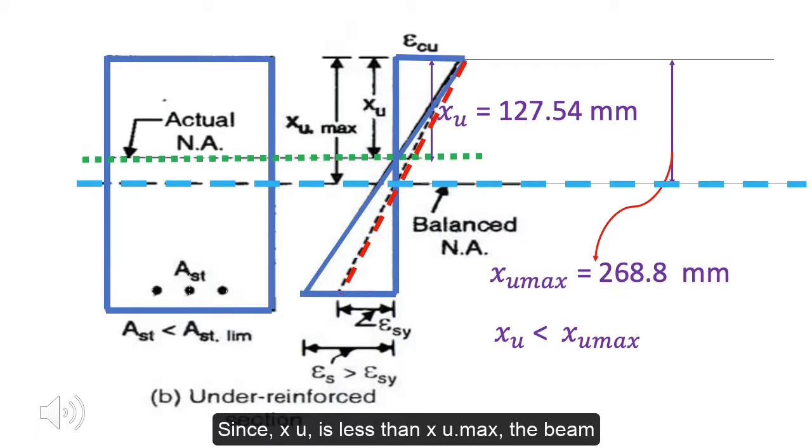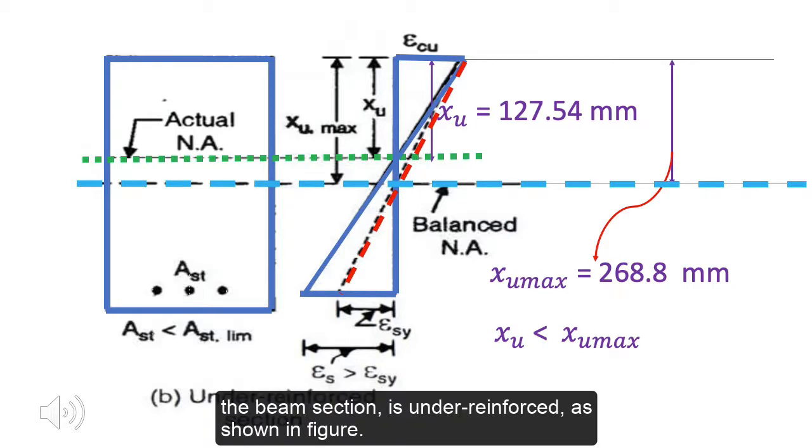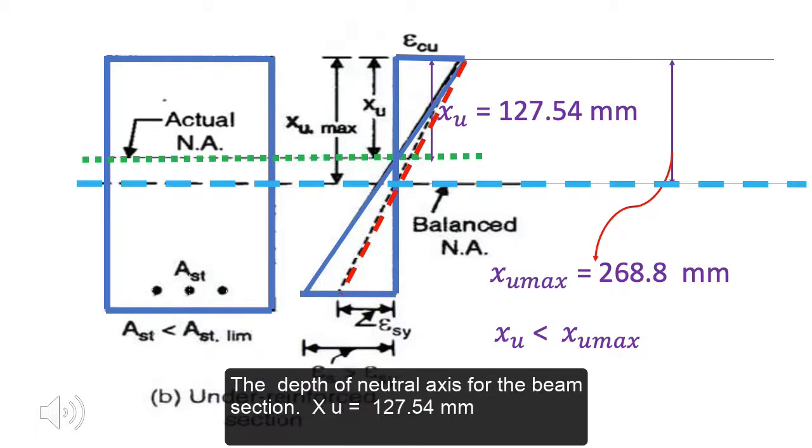Since XU is less than XU max, the beam section is under reinforced as shown in figure. The depth of neutral axis for the beam section XU equals 127.54 millimeters.